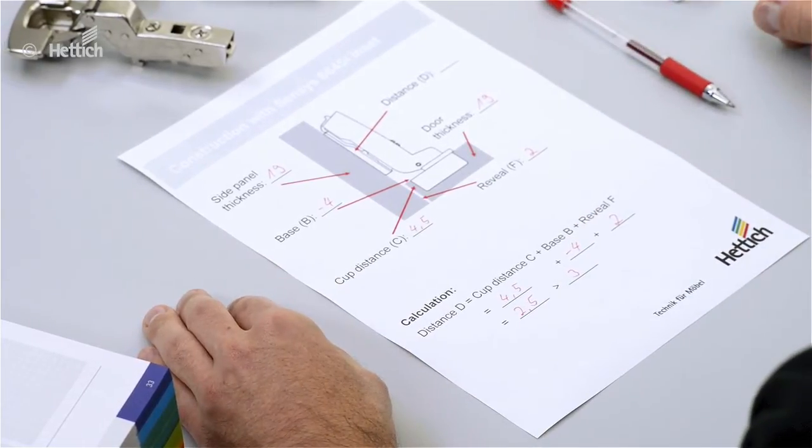The resulting difference of 0.5 millimeters has to be adjusted with the overlay adjustment screw integrated in the hinge.